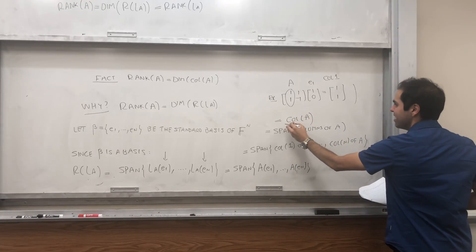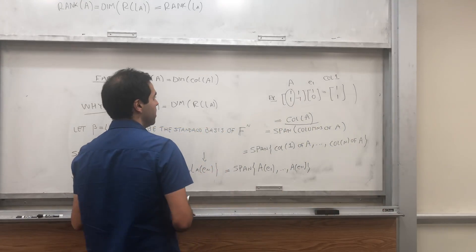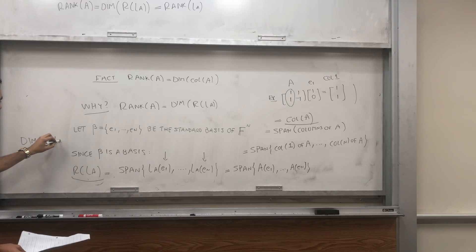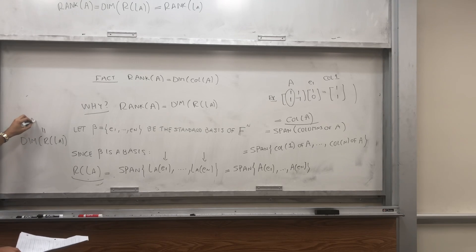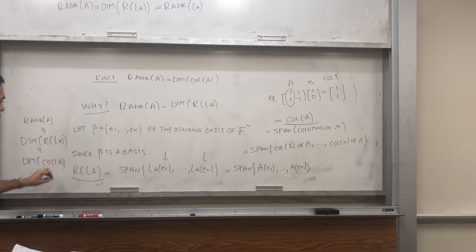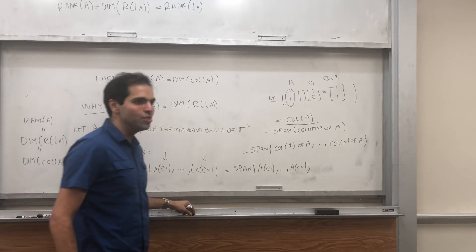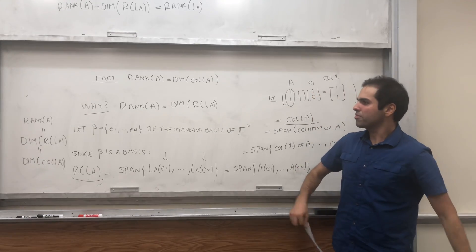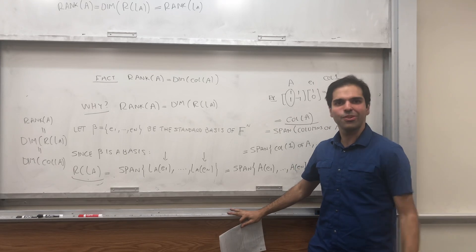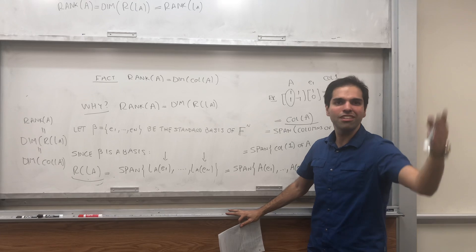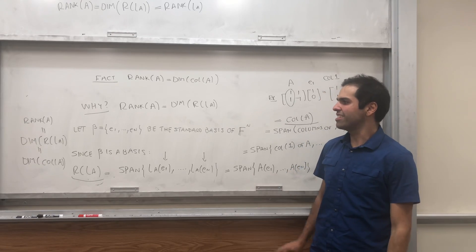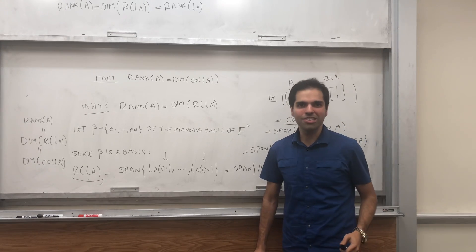So the range of L_a is the column space of a. In particular, the dimension of the range of L_a — which is the rank of a — equals the dimension of the column space of a. From now on, you can just use the fact that the rank is the dimension of the column space of a. That's why all the stuff you learned about row reduction works: you row reduce a matrix, the rank is preserved, and you can find the column space of the easier matrix to find the rank.